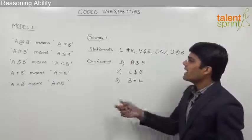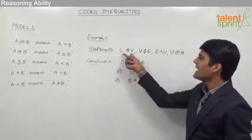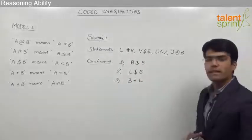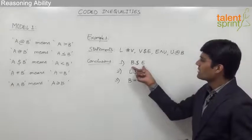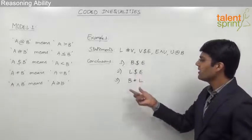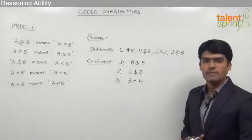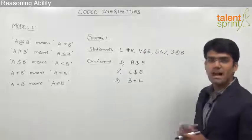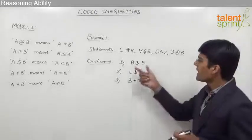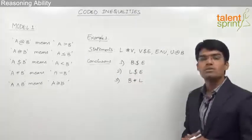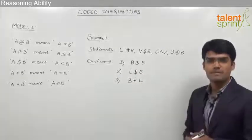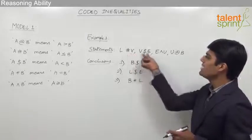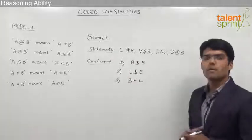The question has statements: L # V, V $ E, E ^ U, and U @ B. It has three conclusions: B $ E, L $ E, and B * L. We need to assume that the given statements are true and find out which of the given conclusions follow. To solve this, we first need to replace each symbol with the proper inequality.